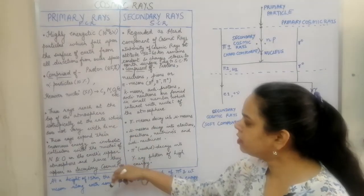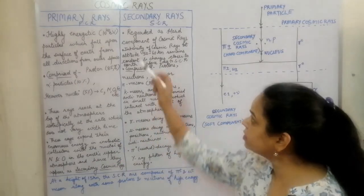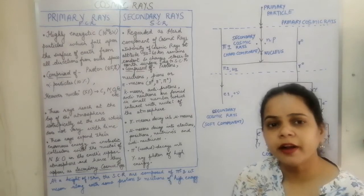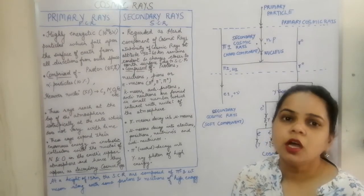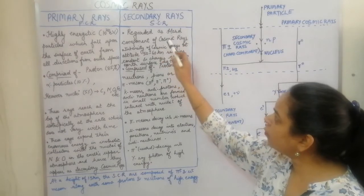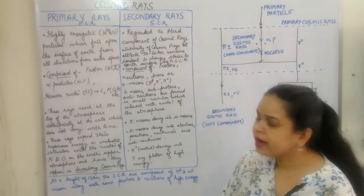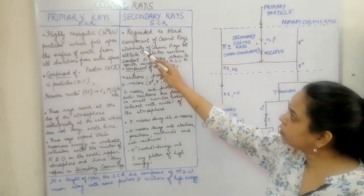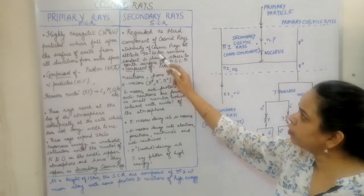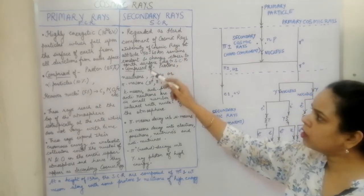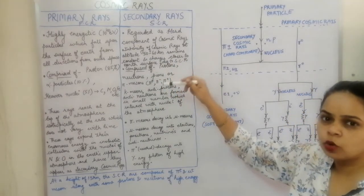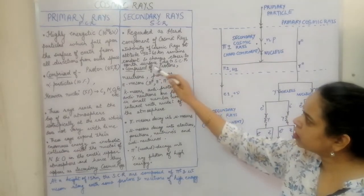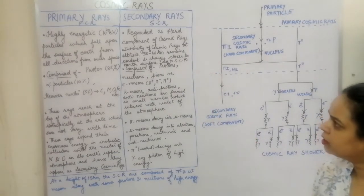The secondary cosmic rays are known as or regarded as the hard component of the cosmic rays. The intensity of the hard cosmic rays does not vary — the intensity at an altitude of 50 to 60 kilometers remains constant, and it changes only when it is close to the surface of the earth, due to the secondary cosmic rays.